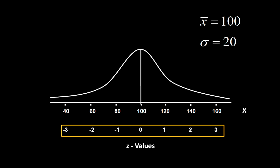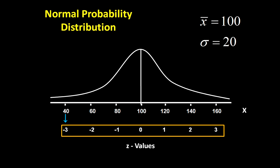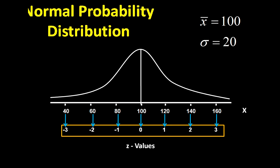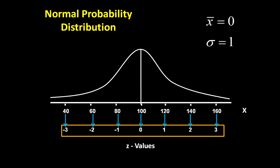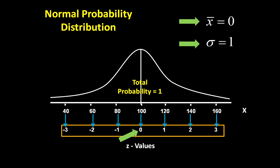Z values are represented just below the X values along the X axis. What are Z values? Standardized X values are called Z values. When we view the curve with reference to Z values, Normal Distribution becomes Normal Probability Distribution. The Normal Probability curve is one whose mean is 0, standard deviation is 1, and the area under the curve shows the total probability which is equal to 1.